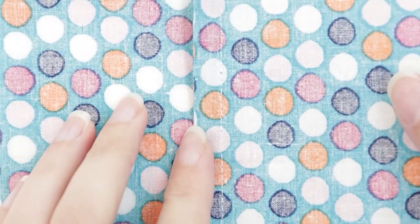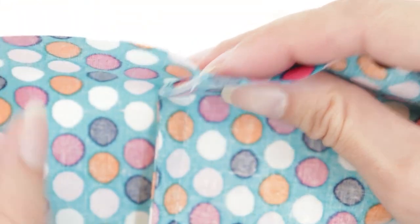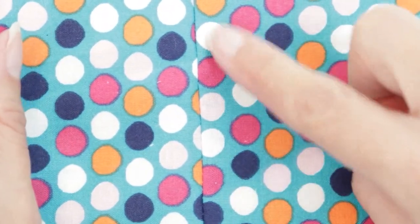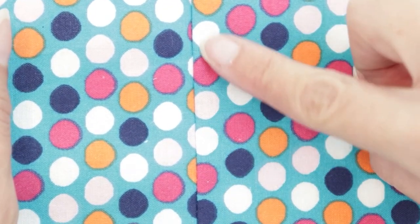We now have a very polished seam allowance. You can't see any raw edges because they're all trapped inside this channel. When you look at the front side, you shouldn't see any strings or raw edges along your finished seam.